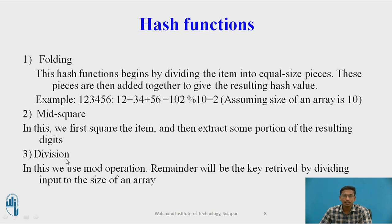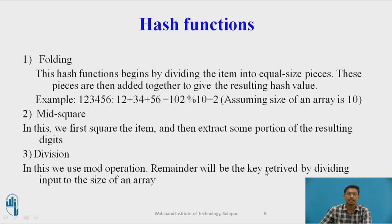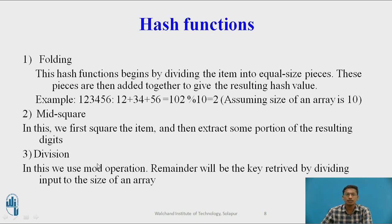The third one is division. This is the most common and simple hash function mostly used. In the division function, you use the mod operation and the remainder is used as an index for storing the input value inside the hash table. The remainder is your key, retrieved by dividing the input with the size of the array — so you perform the mod operation with the size of the array.